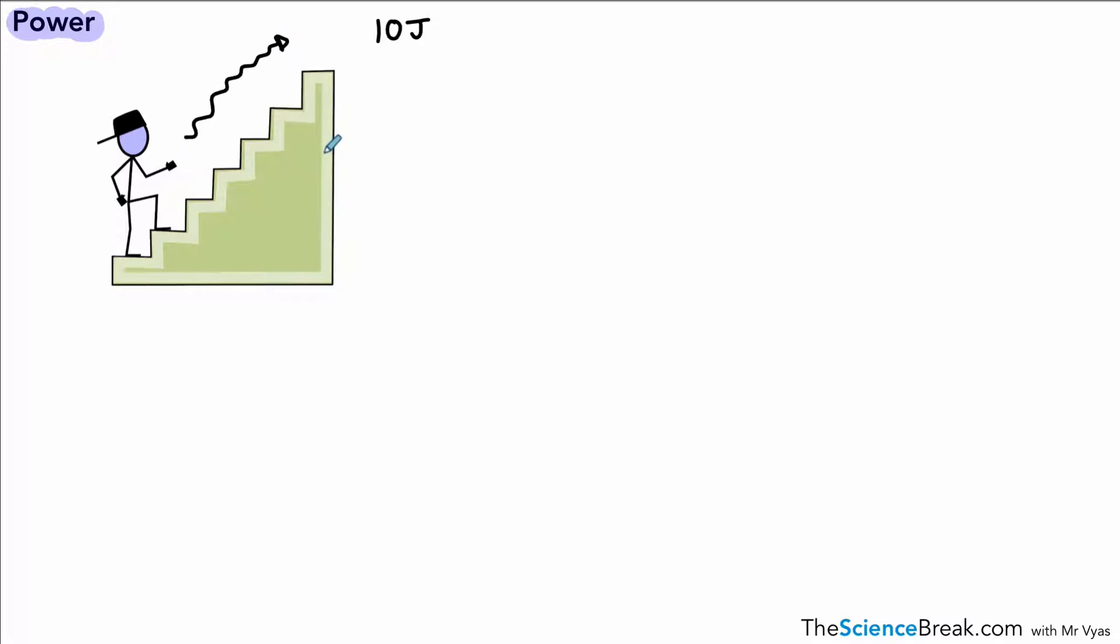Now we can look at a second example, doing the same task but the slight difference here is that the person is moving more quickly, the person is running. It still takes 10 joules of energy, still need to transfer 10 joules of energy to get to the top of the stairs, but on the right-hand side, the second example, the person is running.